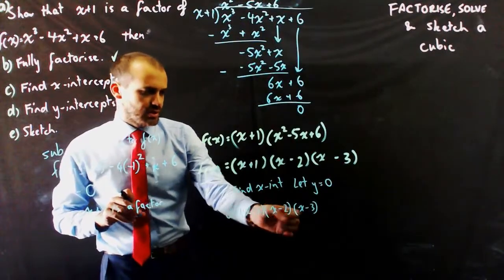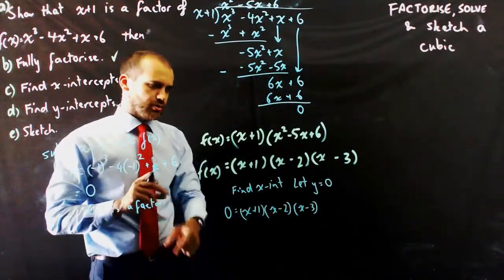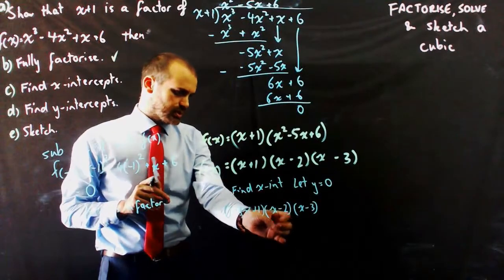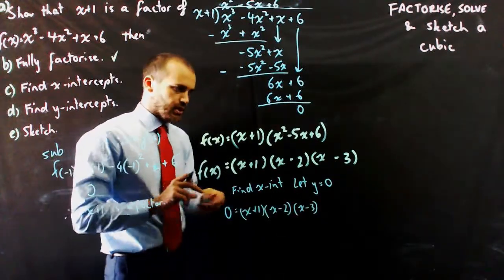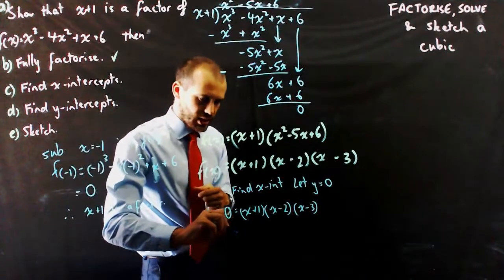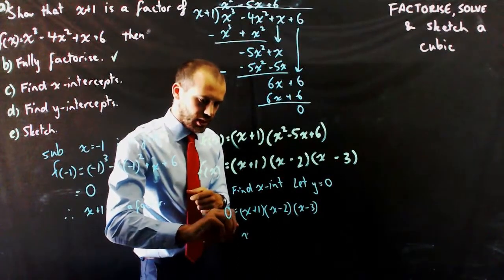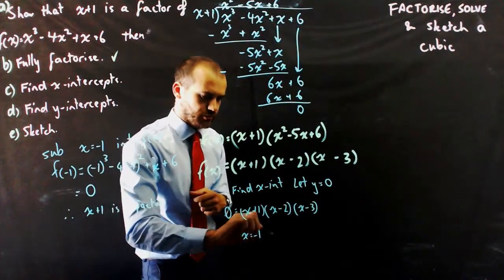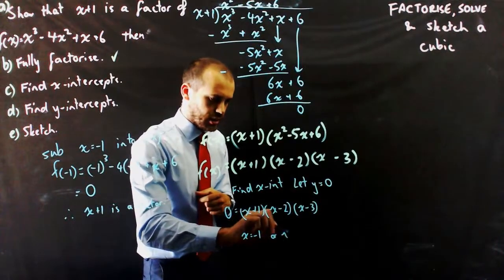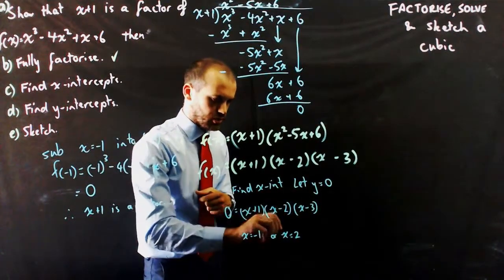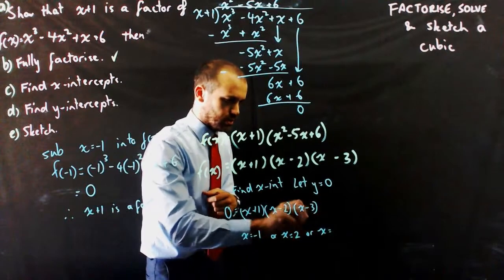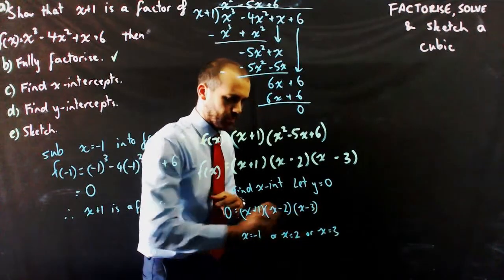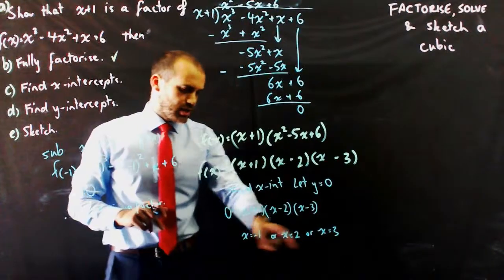Something times something times something equals 0. That means that that must be equal to 0, that must be equal to 0, or that must be equal to 0. If that's true then our answers are x equals negative 1, or x equals positive 2 or x equals positive 3. So there are my three answers.